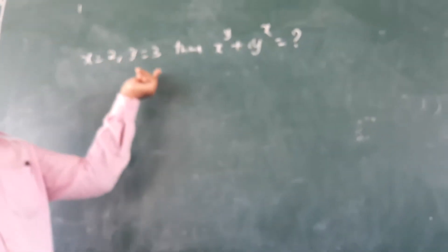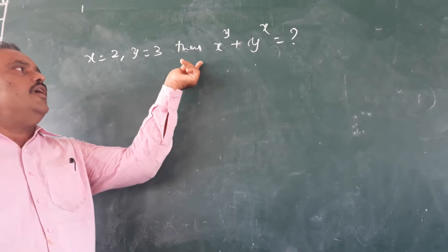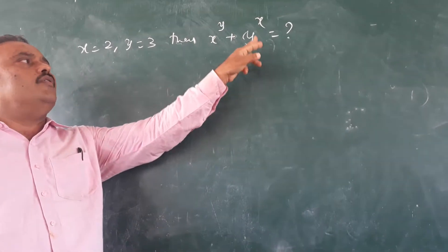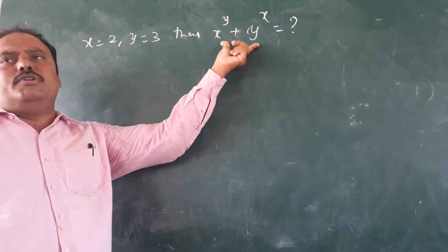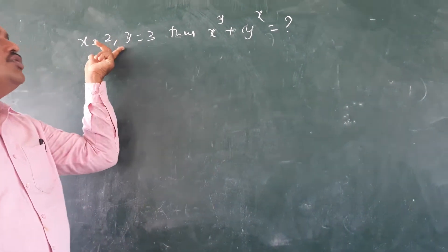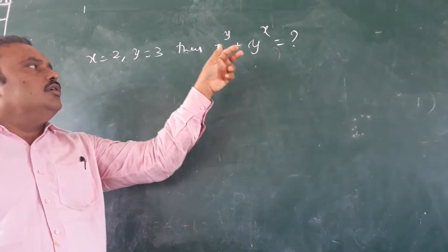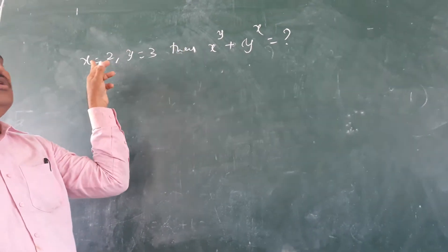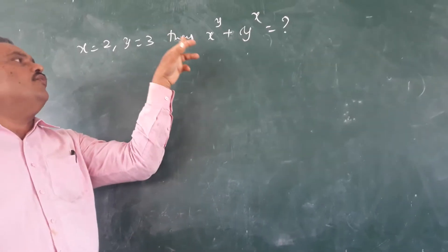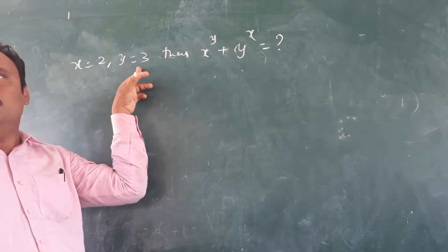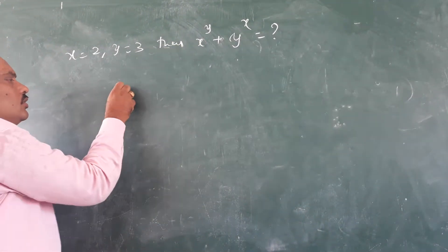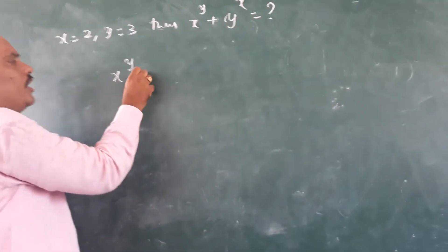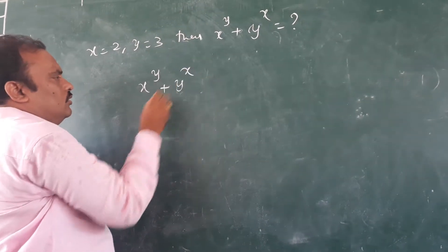If x is equal to 2 and y is equal to 3, then find x power y plus y power x. To solve this, we need to substitute the given values. Instead of x we have to put 2, and instead of y we have to put 3. So we write the expression x power y plus y power x with these values substituted.